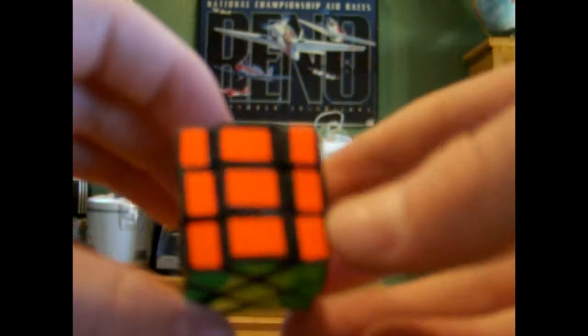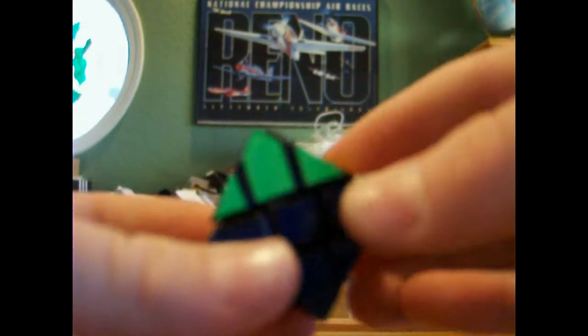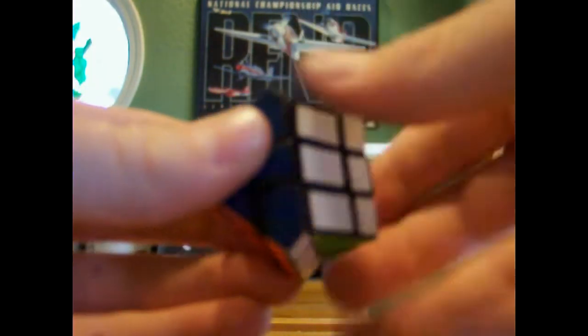You can see it. All the stickers are hand cut. So you can finger trick it pretty well. It locks up though because it's a mini, it's a keychain Rubik's Cube, so as you know, Rubik's Cubes lock up a lot, the Rubik's brand ones.